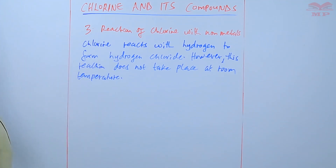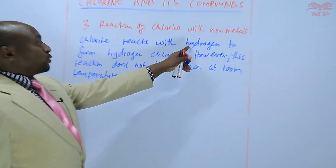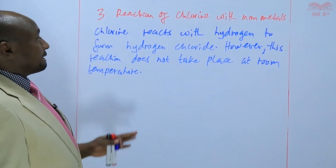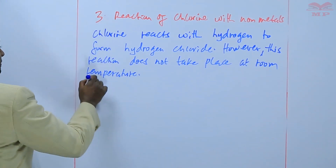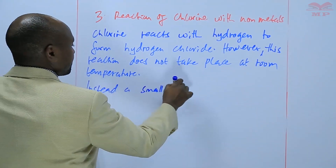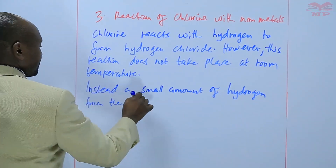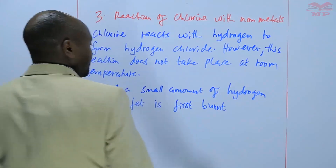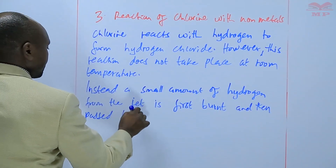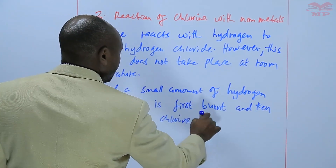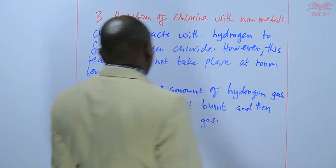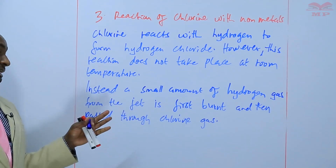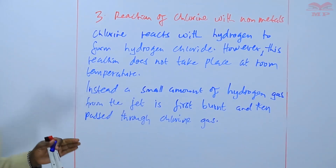So instead, a small amount of pure hydrogen is burnt and then passed into chlorine gas so that the reaction can take place. We take a small amount of hydrogen gas coming through a jet that has a very small opening. It is first burnt, and then as it is burning, it is passed into chlorine gas.